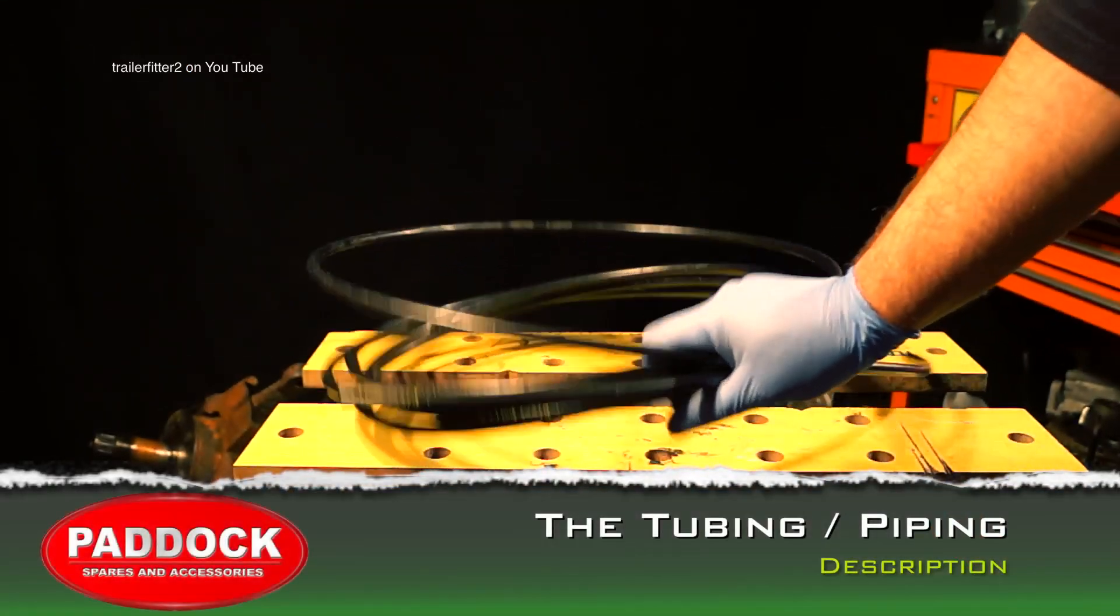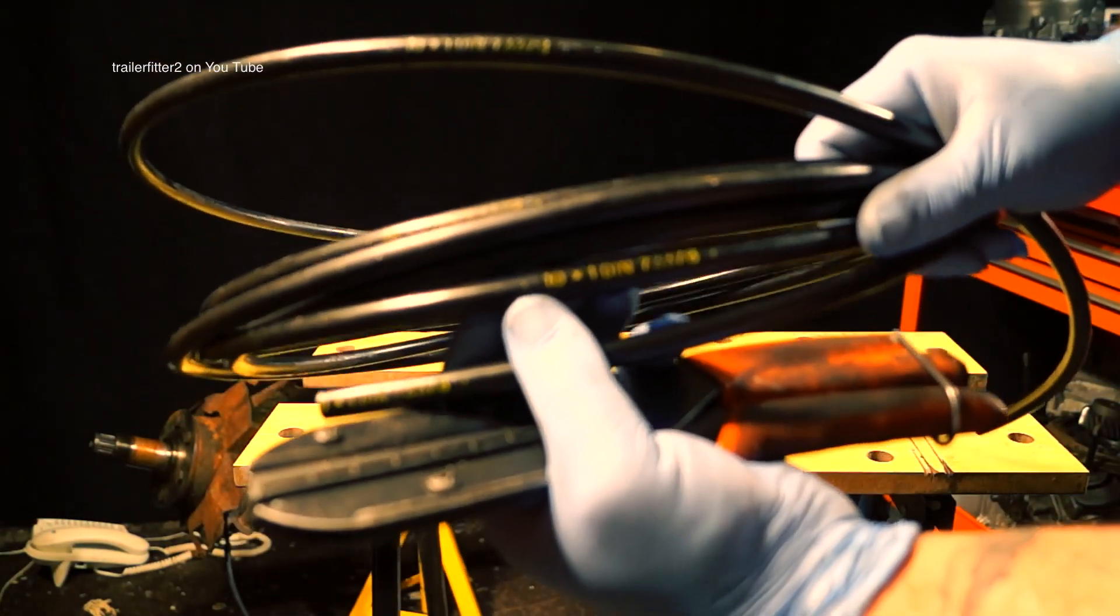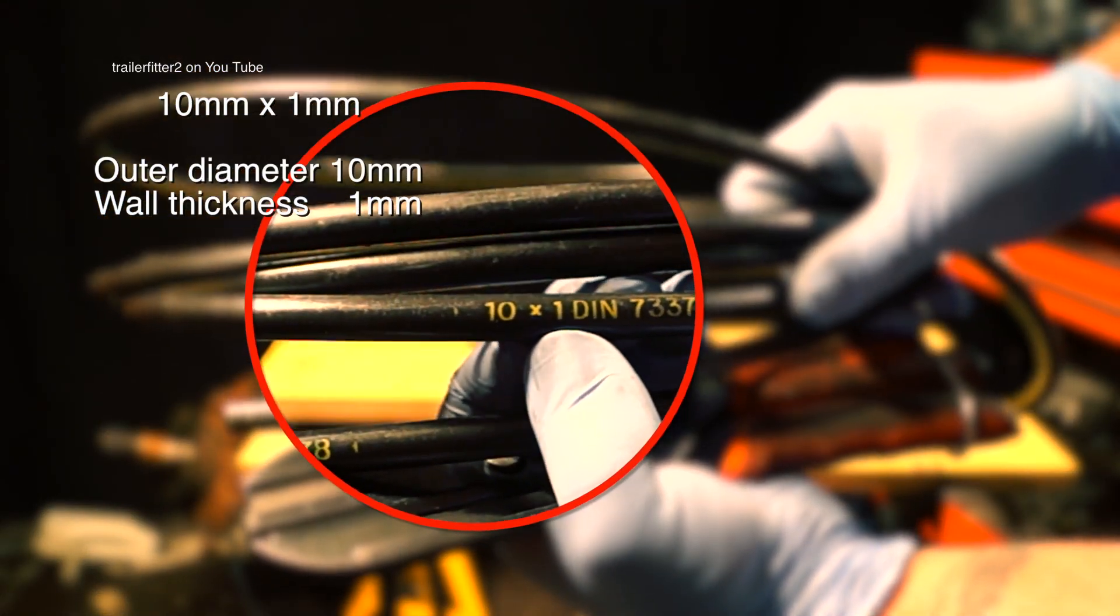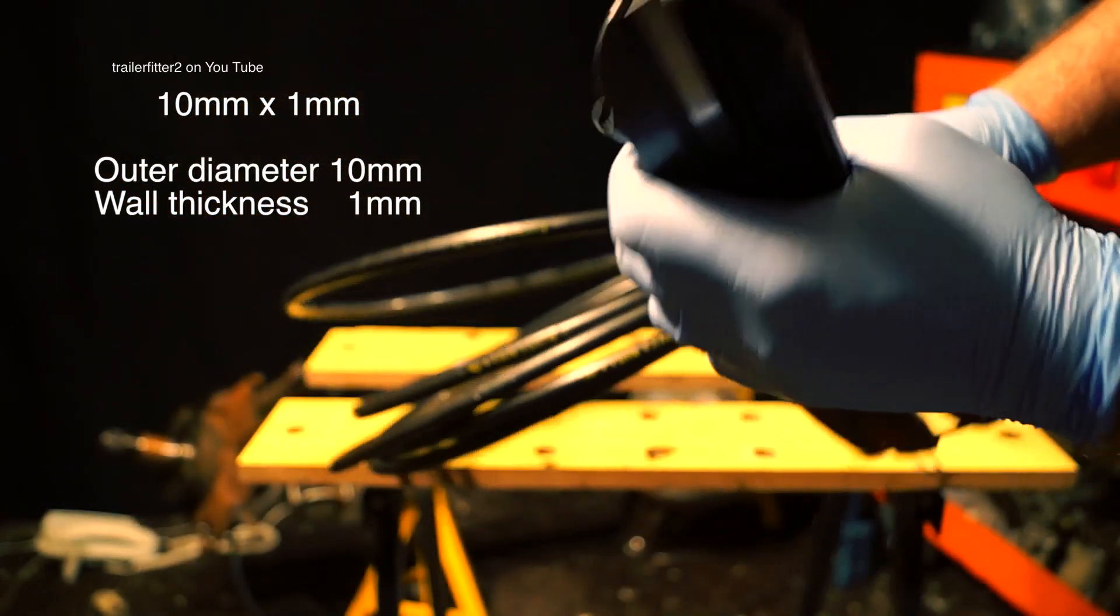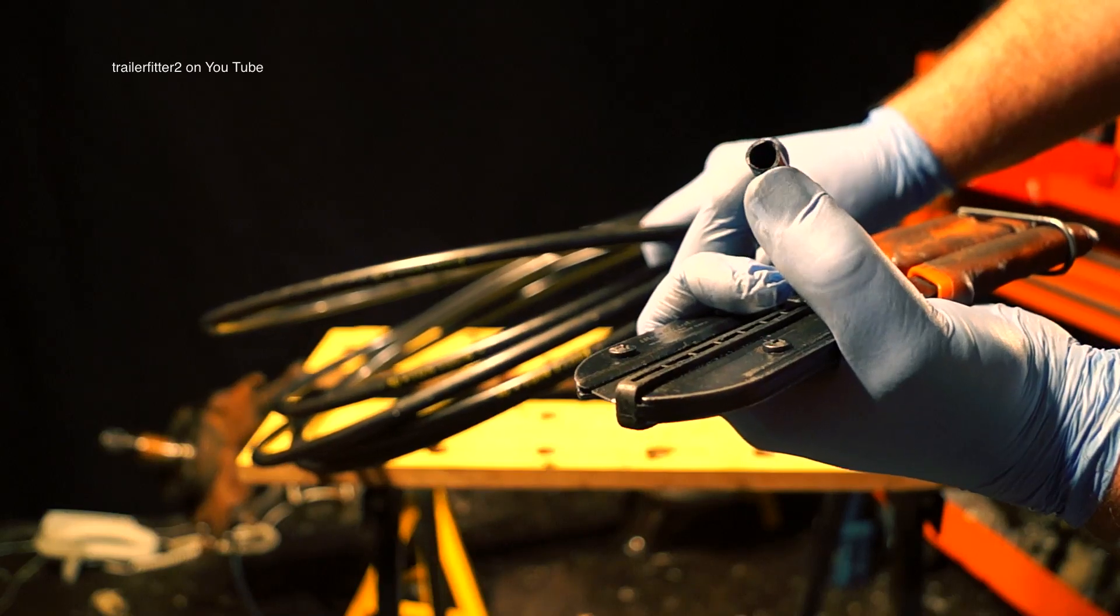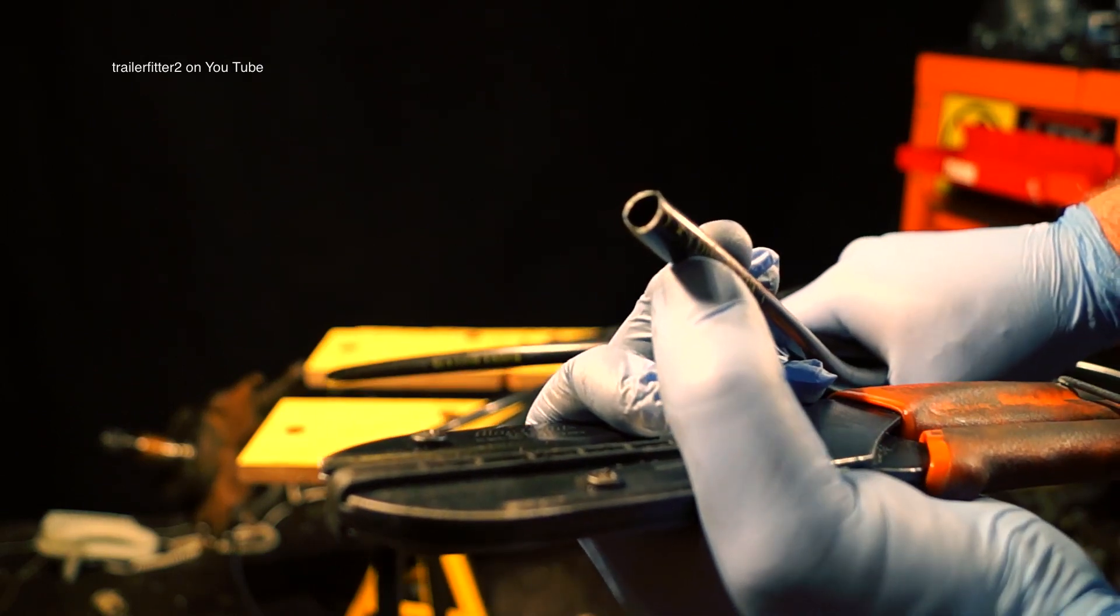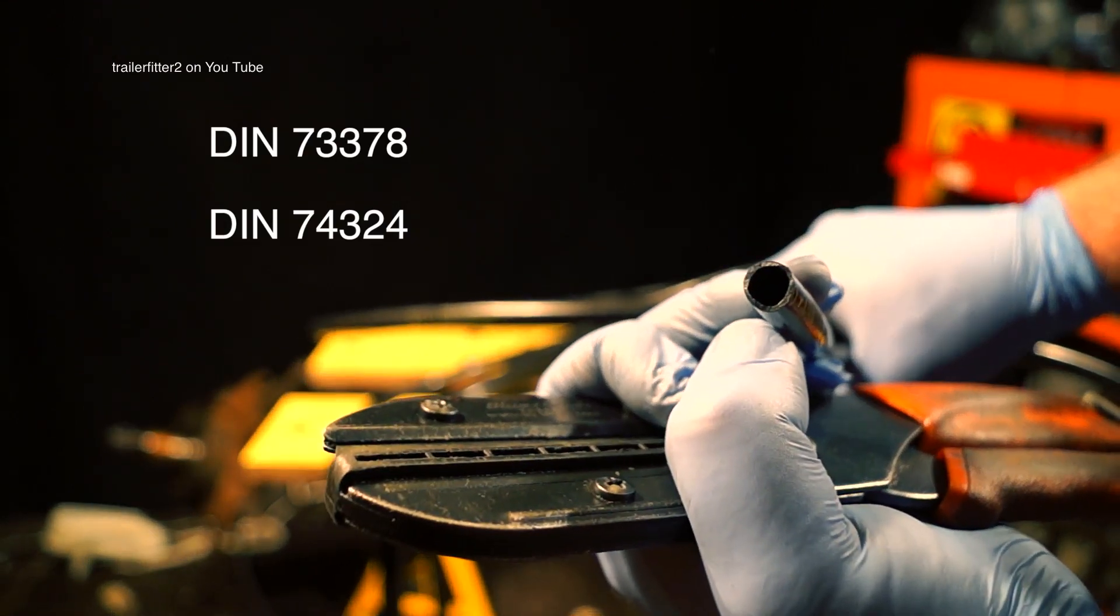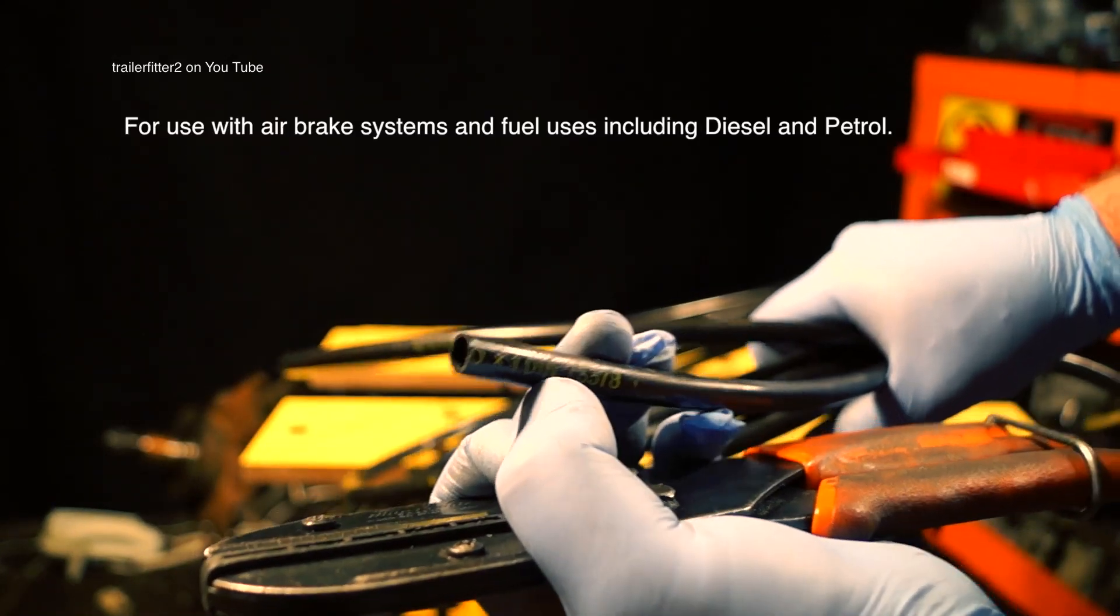This is actually air brake tubing. However, the standard that's on here also is recommended for fuels, diesel and petrol. Size of this tubing is 10mm by 1mm, which means the outer diameter is 10mm and the wall thickness is 1mm. This tubing comes in a variety of sizes, different wall thicknesses and outer diameter sizes, imperial and metric. If you're looking for fuel piping, you want to get it so it's either DIN 73378 or DIN 74324. Now these are air pressure and fuel standard piping.